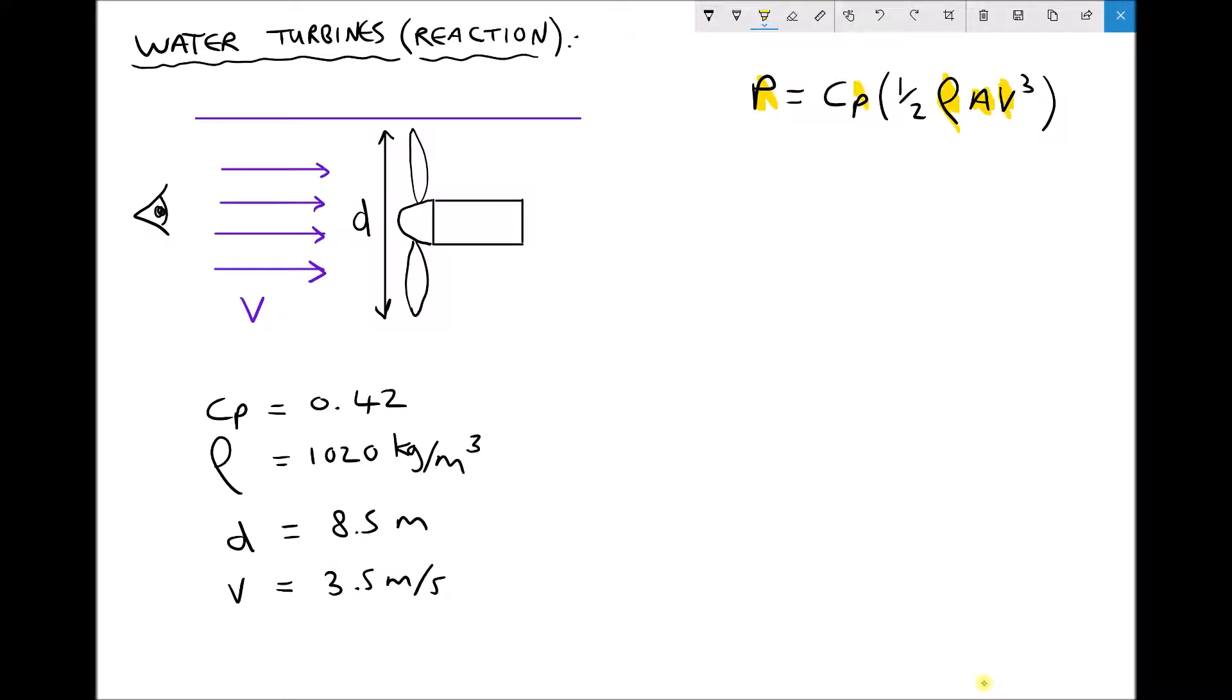The remaining term then is our coefficient of power. And our coefficient of power tells us how much of the kinetic energy that's contained within the fluid is actually going to get converted to electrical power. If that value of Cp was a half, then half of the kinetic energy in the fluid would be converted to electrical power.